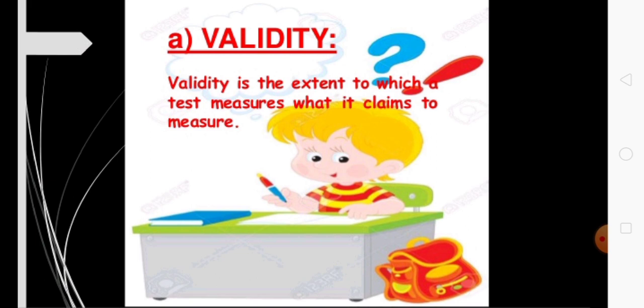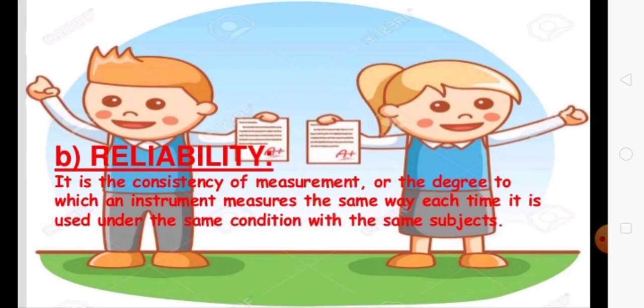For example, a test for grade five students given to grade three is not valid. Validity is classified into four types: content validity, concurrent validity, predictor validity, and construct validity.